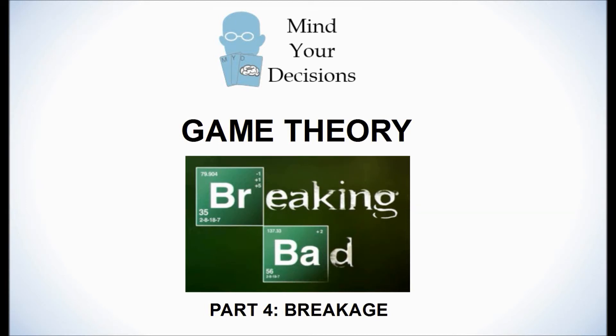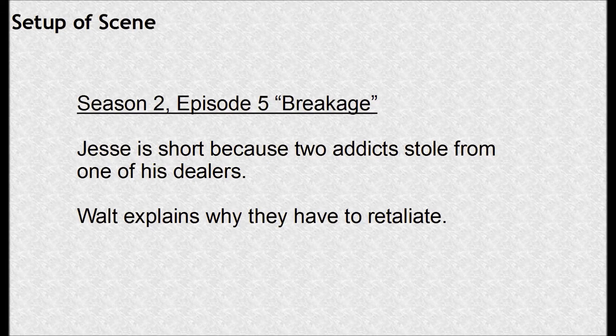Welcome to part 4 of Game Theory in Breaking Bad. The scene we're going to discuss is breakage. The setup to the scene is that Jesse is short on some money because two drug addicts have stolen from one of his dealers.